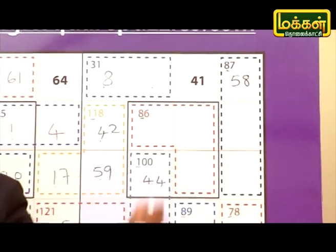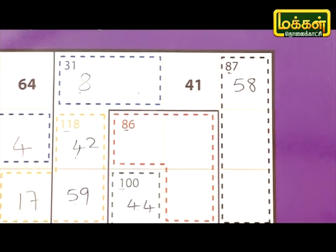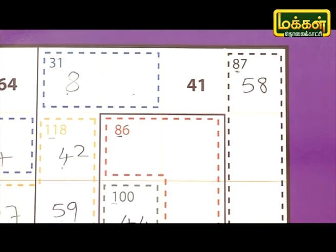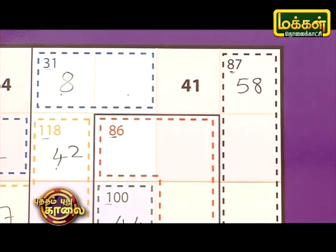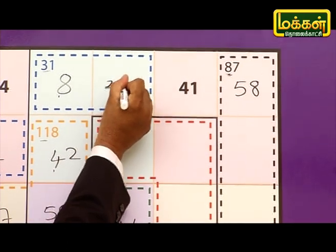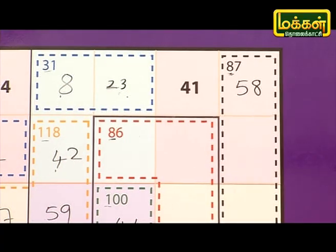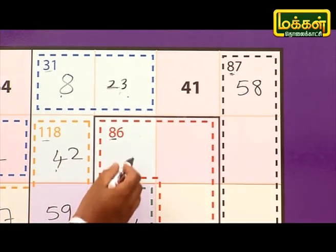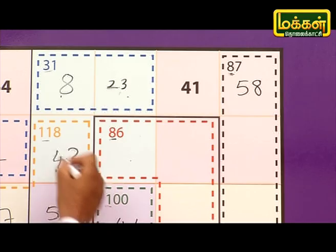Now, what is 39 minus 8? 39 minus 10 is 20. 29 plus 2 is 23. Now, what is this? This is 30.